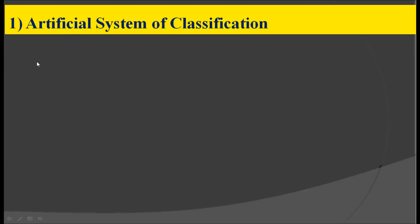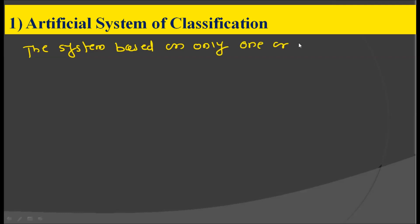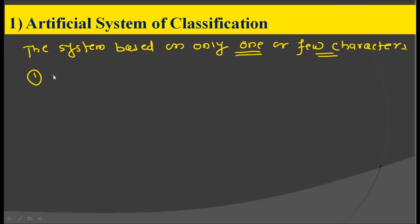The artificial system of classification can be defined as the system based on only one or few characters. If the system is based on only one character or few characters, that system of classification is called the artificial system of classification. So if we take only one, two, or three characters to classify living organisms, such classification is called the artificial system of classification.